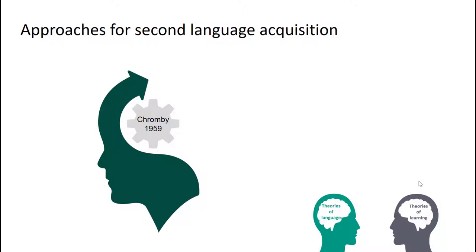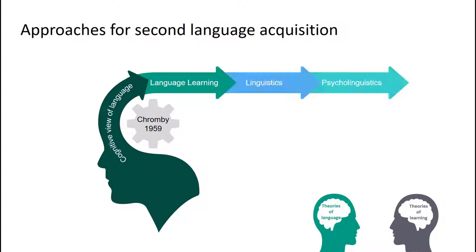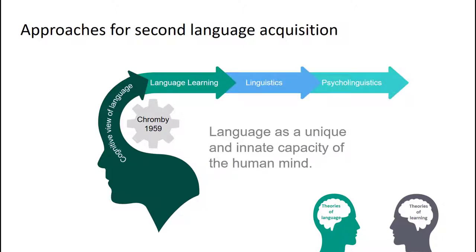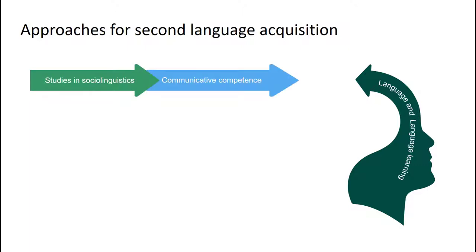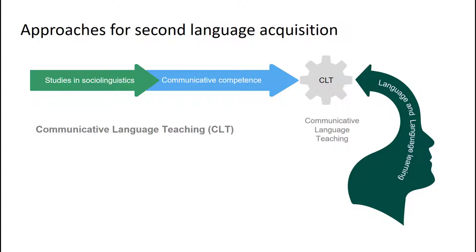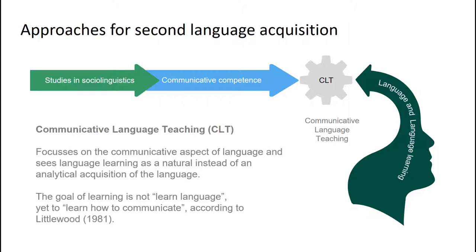Chomsky's 1959 cognitive view of language and language learning was a pivotal point in the area of linguistics and psycholinguistics, by seeing language as a unique and innate capacity of the human mind. However, a paramount advancement in approaches to second language teaching developed from the studies in sociolinguistics and the upswing of the concepts of communicative competence, which formed the development of communicative language teaching — an approach that focuses on the communicative aspects of language and sees language learning as a natural instead of an analytical acquisition.